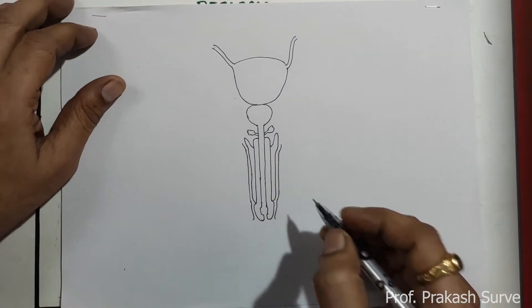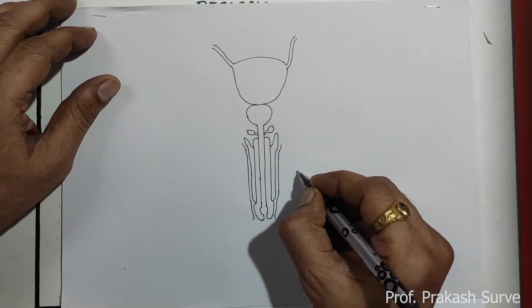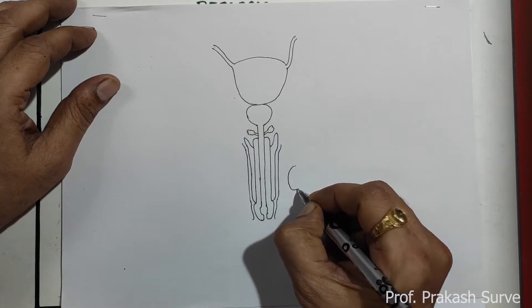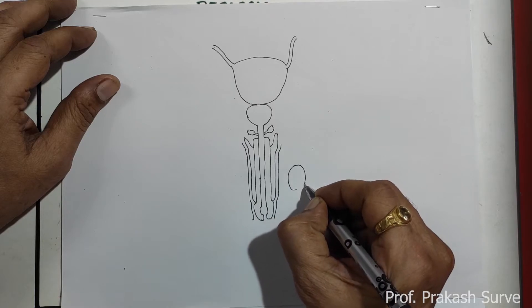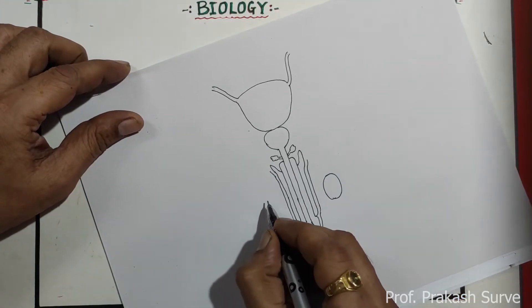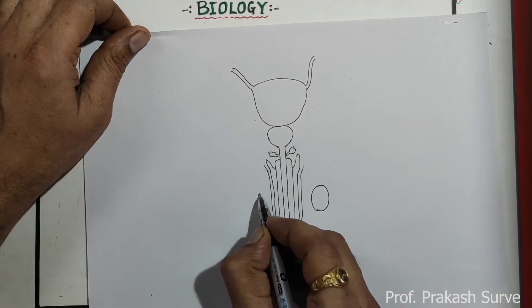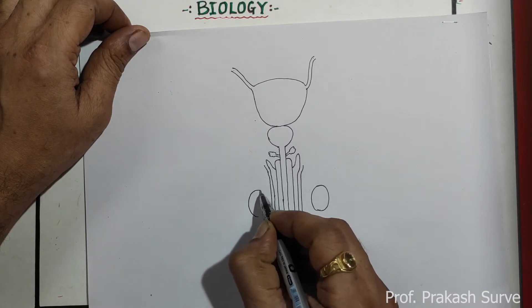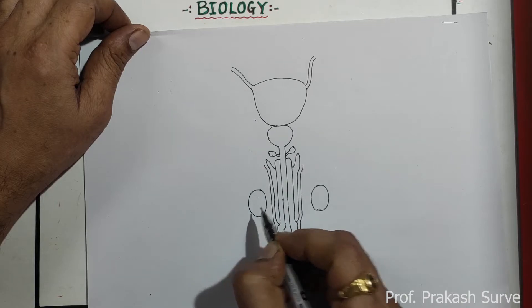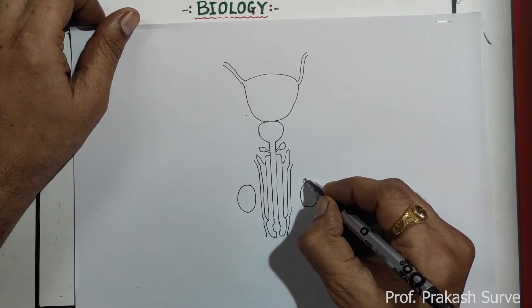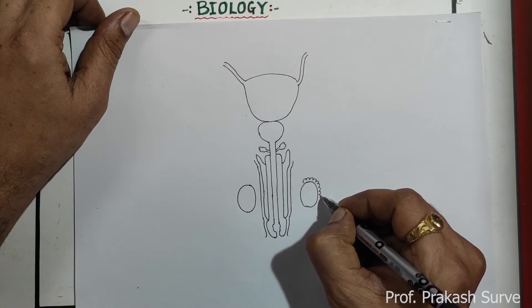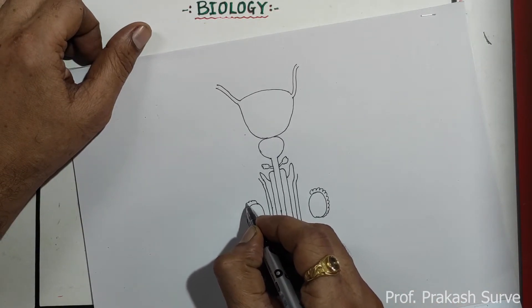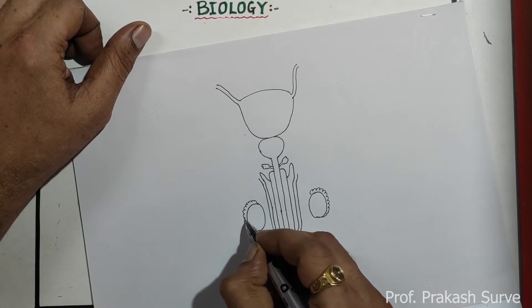Now here we have to draw the testes, so draw one oval shaped testes here. Here cover this with the epididymis, side by side.